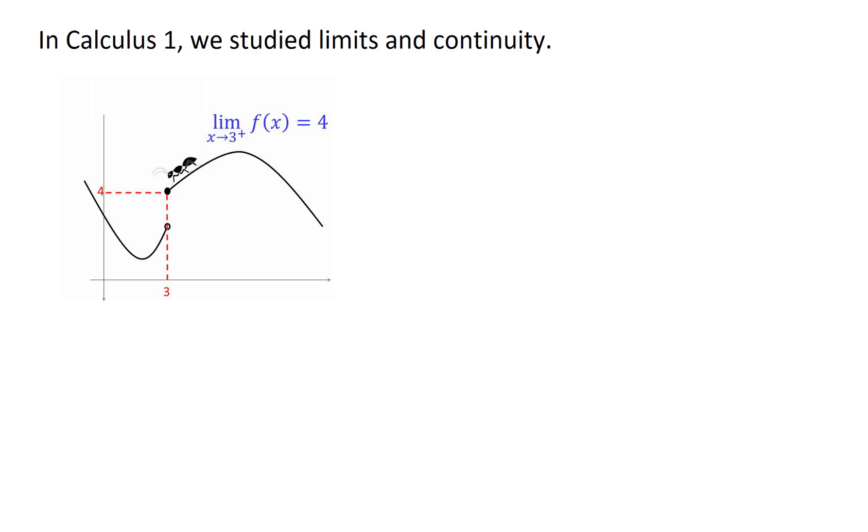And the visualization I'd like you to keep in mind is an insect, maybe an ant, crawling along a function. So in Calc 1 we had f of x, some sort of curvy line. And in this particular picture we've got the ant crawling in, it's coming from the positive x axis, it's coming from that right hand side. And we're coming in as x approaches 3 from the positive side, the y value is approaching 4. So we say the limit as x approaches 3 from the right of f of x equals 4.